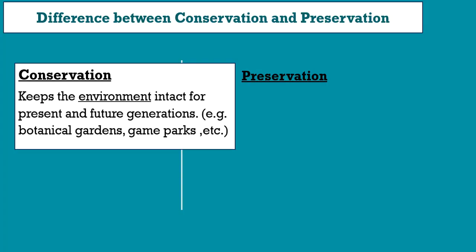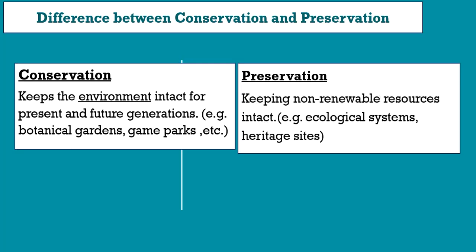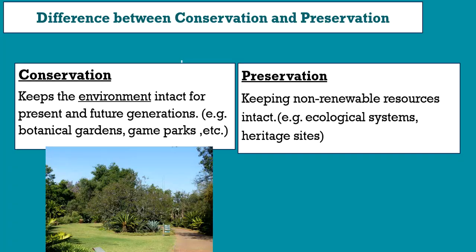Here's the difference between conservation and preservation. Conservation means keeping the environment intact for present and future generations. Examples of conservation include botanical gardens and game parks. Preservation, on the other hand, means keeping non-renewable resources intact, such as ecological systems and heritage sites. Conservation focuses on nature, while preservation focuses on ecological systems and heritage sites.